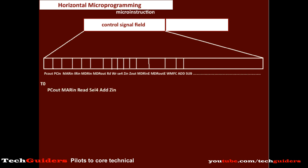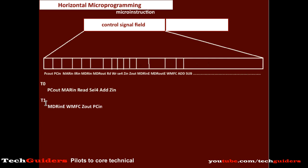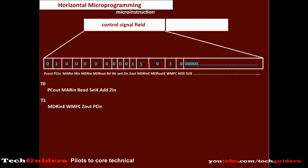In our example for instruction fetch, there were three control steps. At the first control step T0, these are the signals to be generated. Suppose for each control step we have a micro instruction in our micro program — then in the micro instruction corresponding to this control step, for these six signals the bits will be set to one and all remaining bits will be zero. Similarly, at control step T1, these are the signals to be generated: for these four signals their corresponding bits will be one and the rest will be zero.